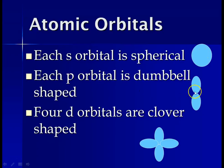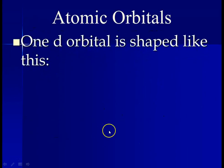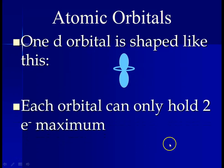Each P orbital has this so-called dumbbell shape. And each D orbital has this so-called cloverleaf shape, except for that one funny D orbital that is shaped like a dumbbell with a donut. And each orbital can only hold a maximum of two electrons.